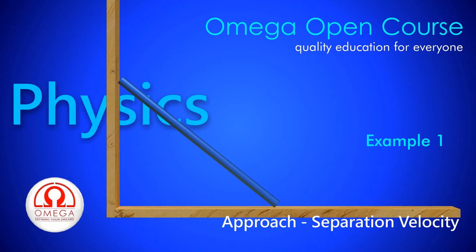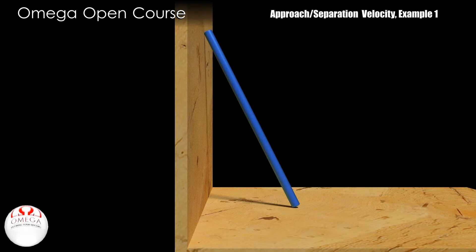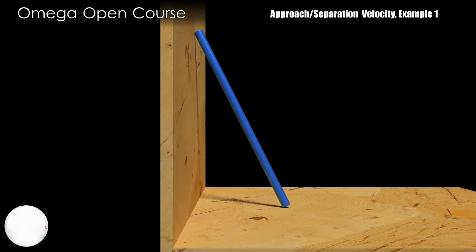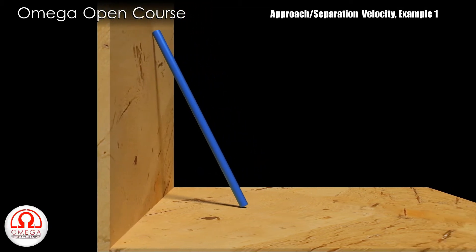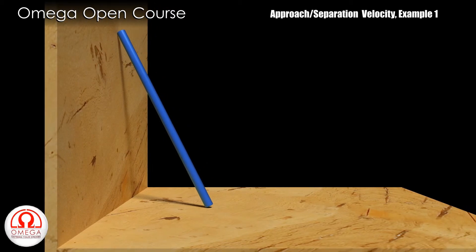Approach Separation Velocity Example 1: Suppose a rod of length L is constrained to move in a manner such that its lower end is always touching the horizontal floor while the upper end is always in contact with the vertical wall.